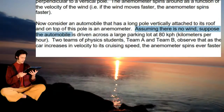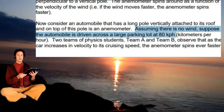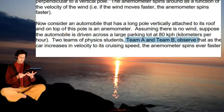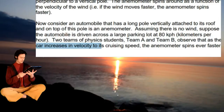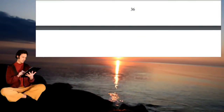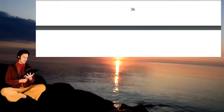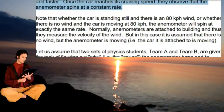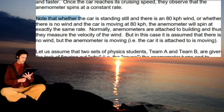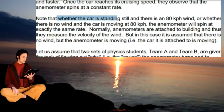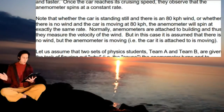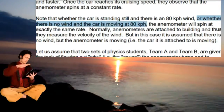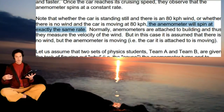Assuming there is no wind, suppose the automobile is driven across a large parking lot at 80 kph. Two teams of physics students, Team A and Team B, observe that as the car increases in velocity to its cruising speed, the anemometer spins faster and faster. Once the car reaches its cruising speed, they observe that the anemometer spins at a constant rate. Note that whether the car is standing still and there is an 80 kph wind, or whether there is no wind and the car is moving at 80 kph, the anemometer will still spin at exactly the same rate.